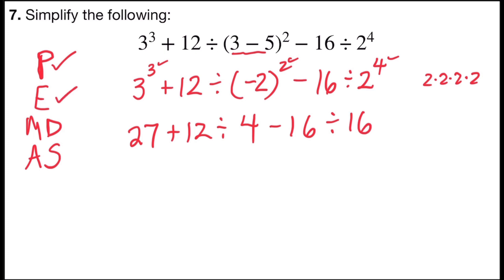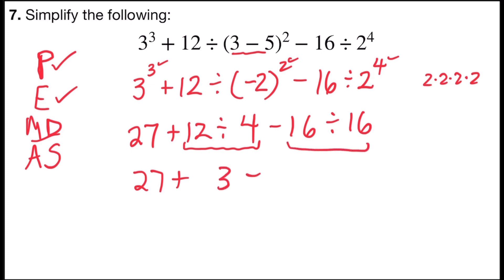Next step, I'm going to work multiplication and division as they appear from left to right. So I have 12 divided by 4, which is 3, and 16 divided by 16, which is 1.